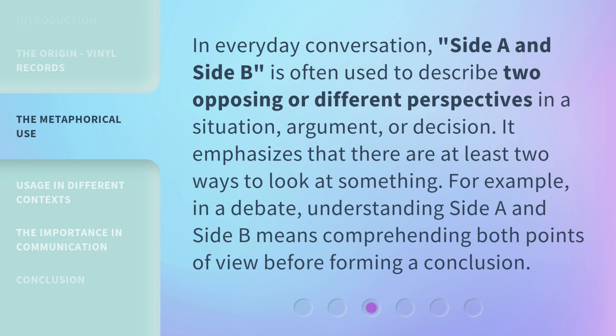In everyday conversation, Side A and Side B is often used to describe two opposing or different perspectives in a situation, argument, or decision. It emphasizes that there are at least two ways to look at something. For example, in a debate, understanding Side A and Side B means comprehending both points of view before forming a conclusion.